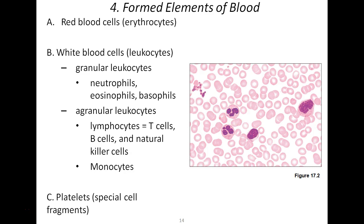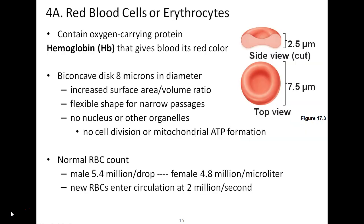White blood cells can be categorized into two main categories: granular leukocytes and agranular leukocytes — referring to the cytoplasm of the cell. Another major formed element is platelets, which are special cell fragments budded off from a larger cell, not standalone cells. Erythrocytes — red blood cells — are sometimes called anucleate, meaning they have no nucleus and are missing other organelles as well.